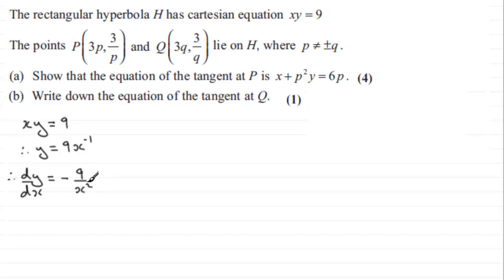Now we just need to get that gradient at P when X equals 3P. So we'll just say here that when X equals 3P, what we've got is therefore DY by DX is going to equal minus 9 then over X squared.